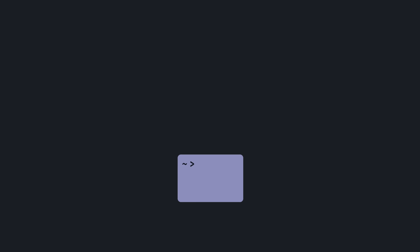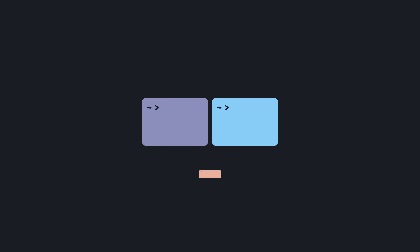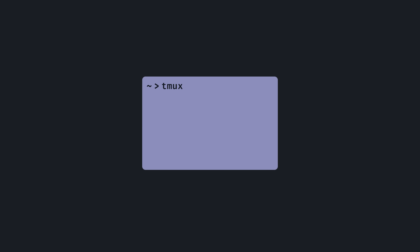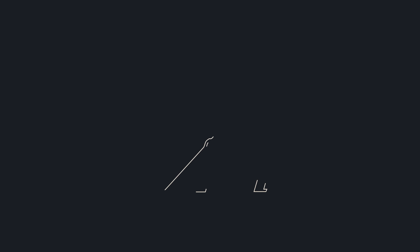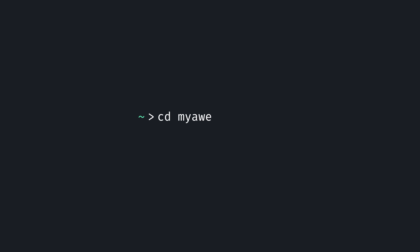I discovered Tmux. No longer did I have to open new terminal windows when one wasn't enough — I could have it all in one, independent of whichever terminal I was using. Then came Vim, which let me edit files directly in the terminal. There are also smaller things, like enabling case-insensitive command completion and displaying the git branch.